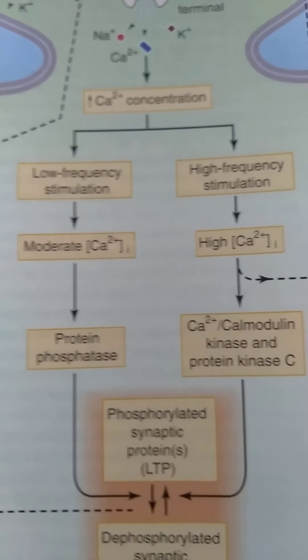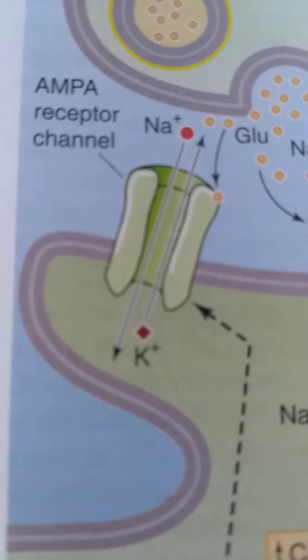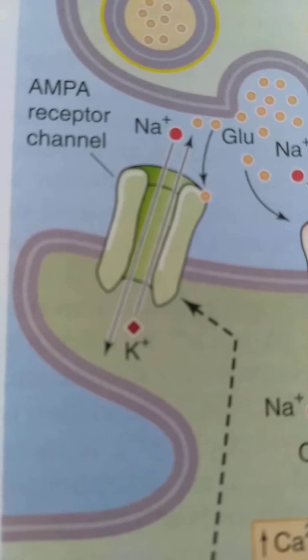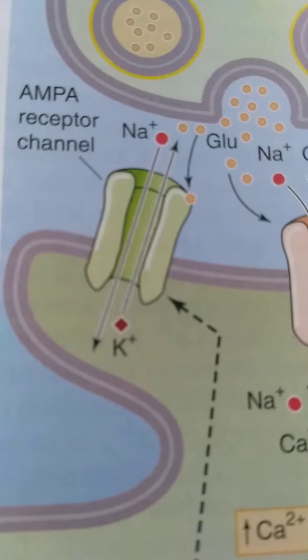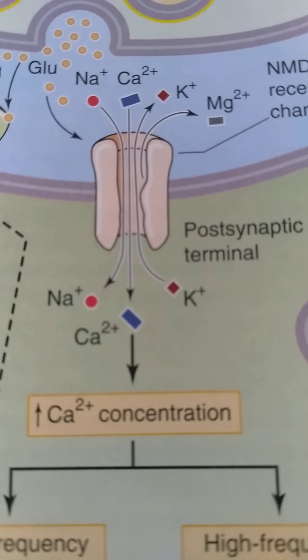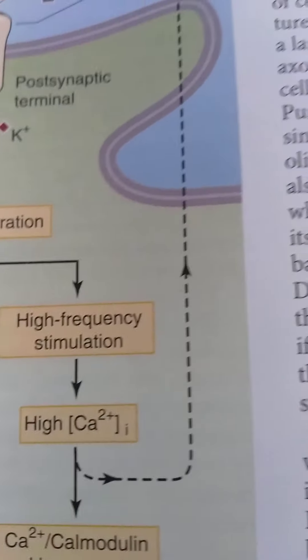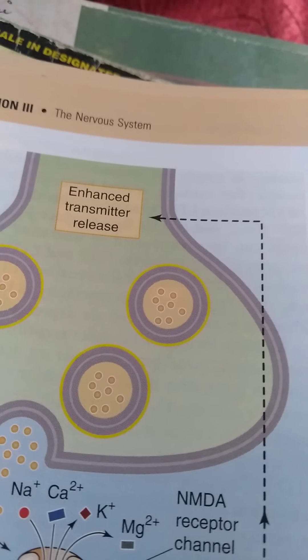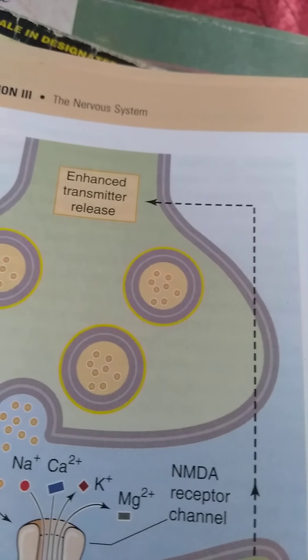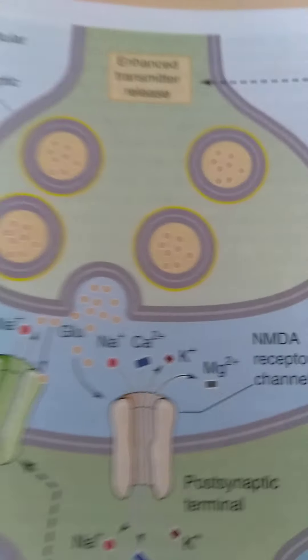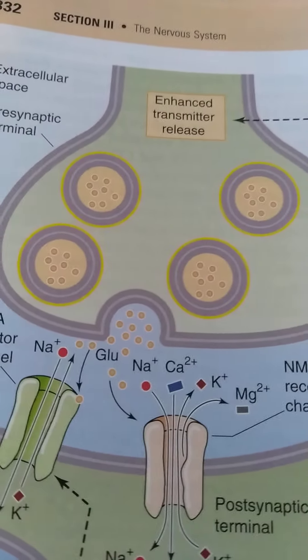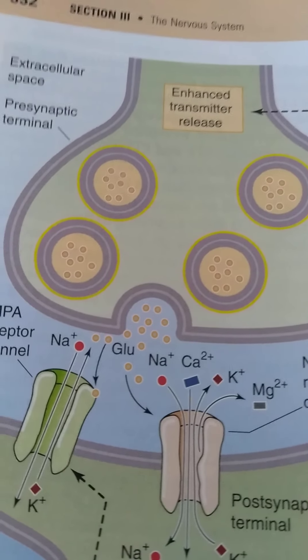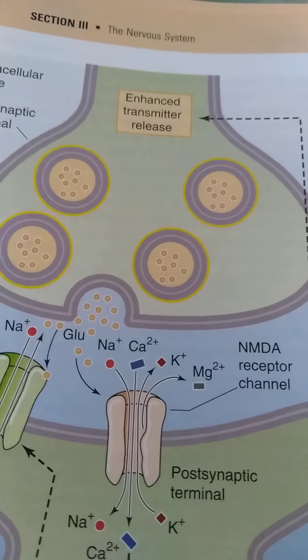Whenever the synaptic proteins are phosphorylated, more and more AMPA receptors are inserted into the membrane, causing further depolarization and more influx of calcium ions. There is also a retrograde signaling going from the post-synaptic terminal to the pre-synaptic terminal via mGlu receptors, which enhances release of neurotransmitter from the pre-synaptic terminal. This leads to long-term potentiation.